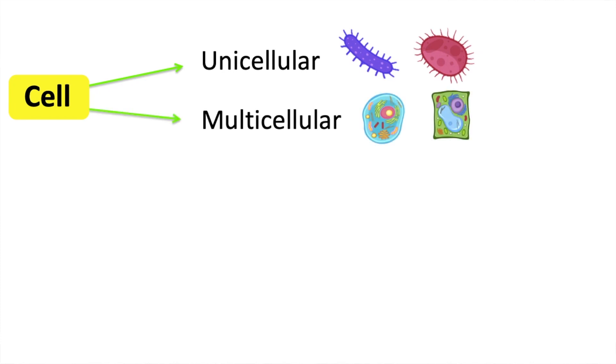Some organisms are multicellular. This means that they have many cells. For example, animals and plants. Animals and plants are both multicellular. However, they have different types of cells.